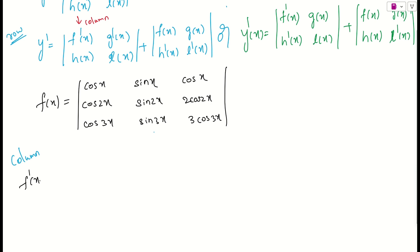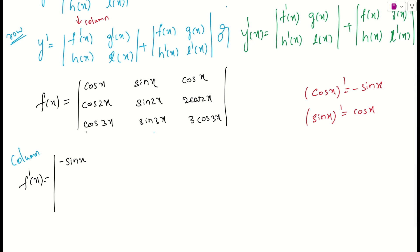Using the column method, let us differentiate the first column. We know the derivative of cos x is −sin x, and the derivative of sin x is cos x. So the first column derivative gives: −sin x, −2·sin 2x (since 2x derivative is 2), and −3·sin 3x (since 3x derivative is 3). The second and third columns are copied as they are.